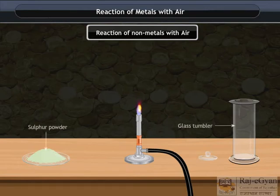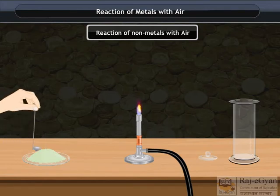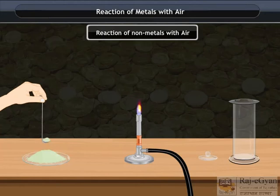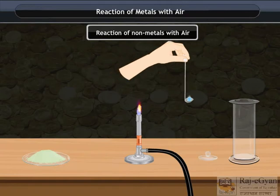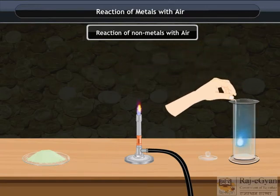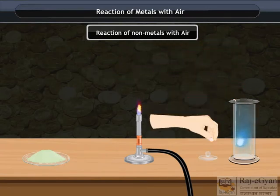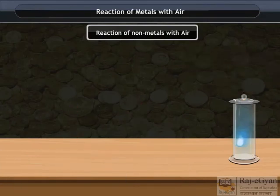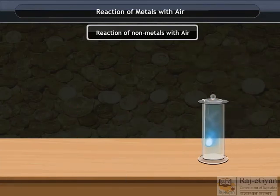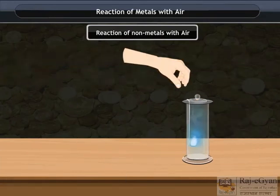Take a small amount of powdered sulphur in a deflagrating spoon and heat it. As soon as the sulphur starts burning, introduce the spoon into a gas jar. Cover the tumbler with the lid to ensure that the gas produced does not escape. Remove the spoon after some time.